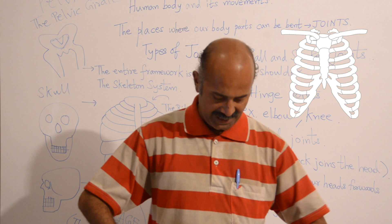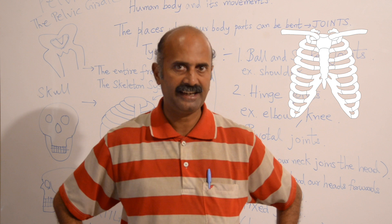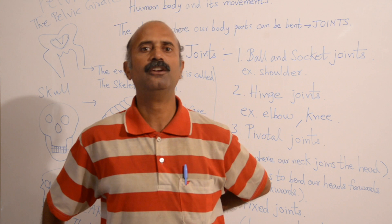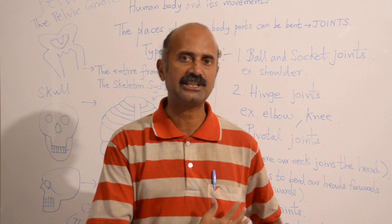We have a hollow below the rib cage for the stomach, liver, intestine, and kidneys. That is why the rib cage is absolutely crucial — we need it for safety purposes and also for efficient functioning of the vital organs, especially the heart and the lungs.